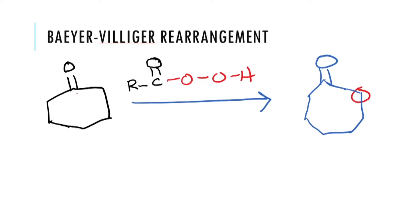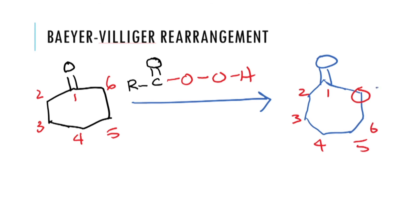So if we number the carbons 1 through 6 in cyclohexanone and keep carbon-1 the same, the product has a 7-membered ring with an oxygen in it. This is the reaction we want to consider — the Baeyer-Villiger rearrangement.